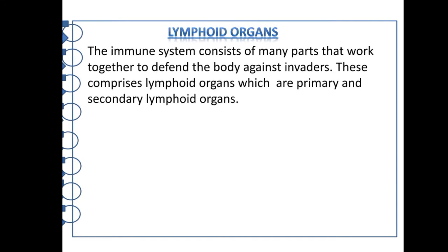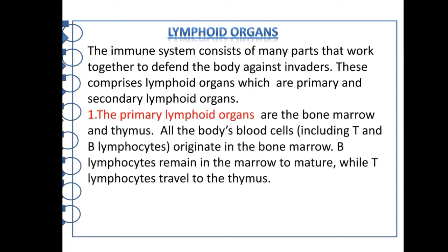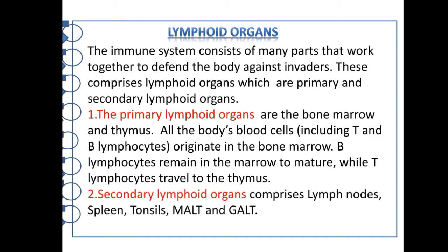The immune system consists of many parts that work together to defend the body against invaders. These comprise primary and secondary lymphoid organs. Primary lymphoid organs are the bone marrow and thymus. All the body's blood cells, including T and B lymphocytes, originate in the bone marrow. B lymphocytes remain in the marrow to mature, while T lymphocytes travel to the thymus.